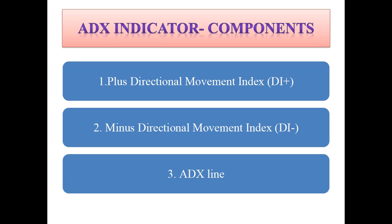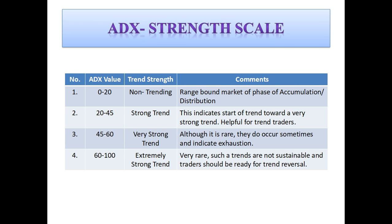Now let's look at the components. First is the Plus Directional Movement Index, DI Plus. Then there's the Minus Directional Movement Index, DI Minus, and the ADX line. Now let's look at the ADX strength scale and how we can use the ADX value to get an idea about trend strength.